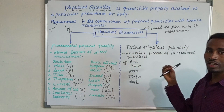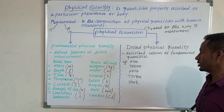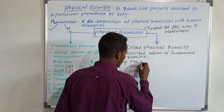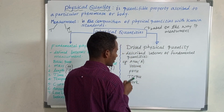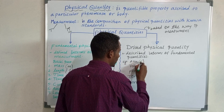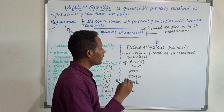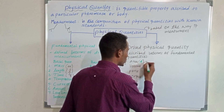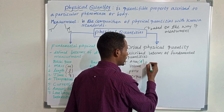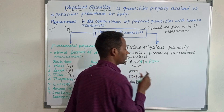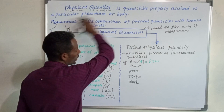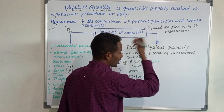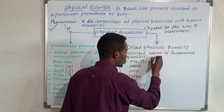We need a fundamental quantity in order to express derived quantities. For example, if you want to express area — the symbol is capital A — we need a mathematical equation to have the size or amount of area. For a rectangular region, the equation is length times width. For a circular region, it is pi r squared.